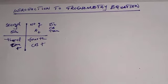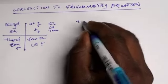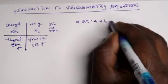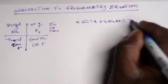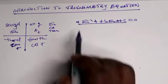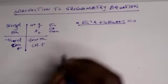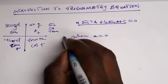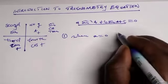There is an equation form we should follow: a·sin²(A) + b·sin(A) + c = 0, because this is a kind of quadratic equation. We have a, b, and c. When a equals zero, this is the first case.